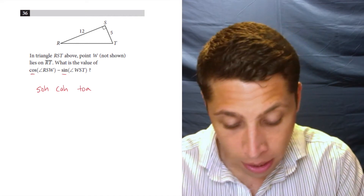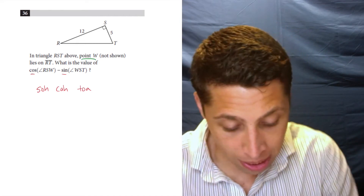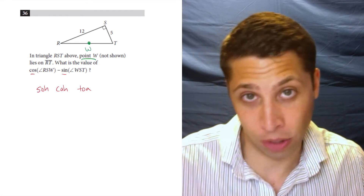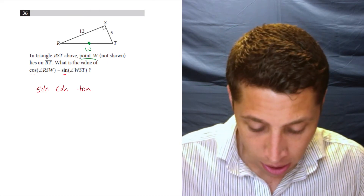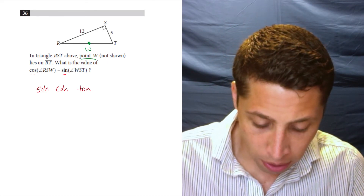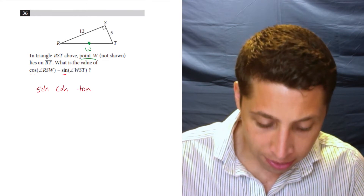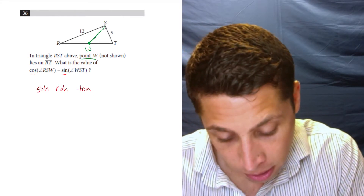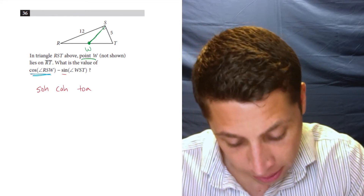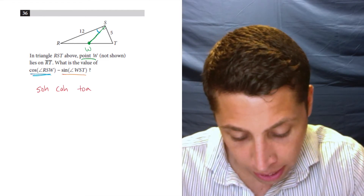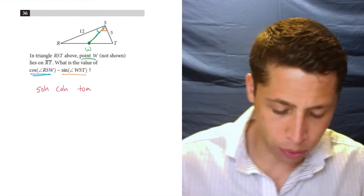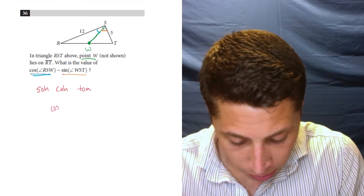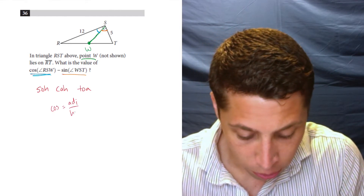In triangle RST, point W (not shown) lies on RT. So I'm going to make a little point W and put it somewhere in the middle — it doesn't really matter. They want the value of cosine of angle RSW, which means I have to draw not just the point but the line, because RSW is right in here. And then sine of WST is this other angle over here.